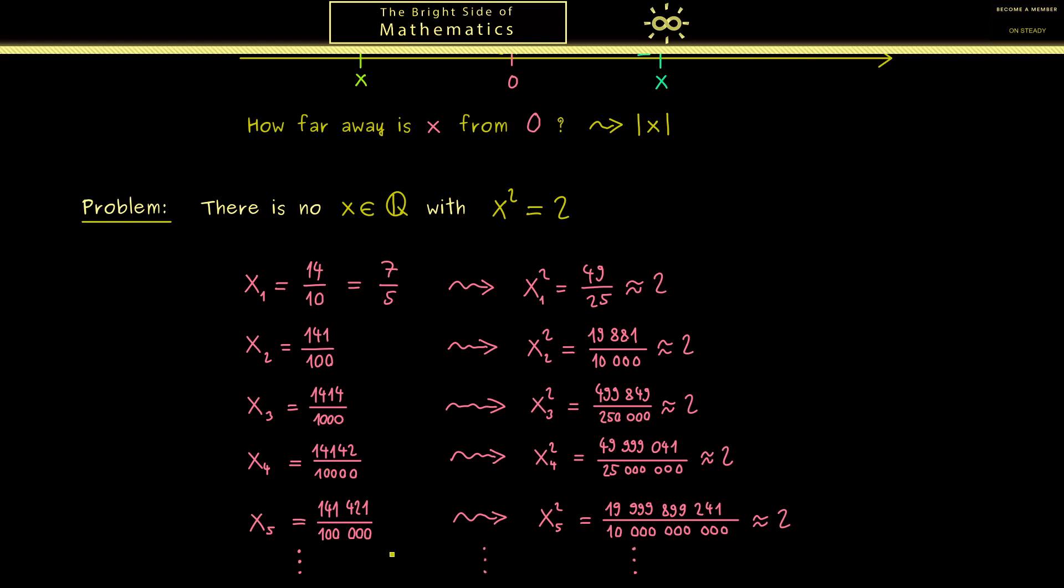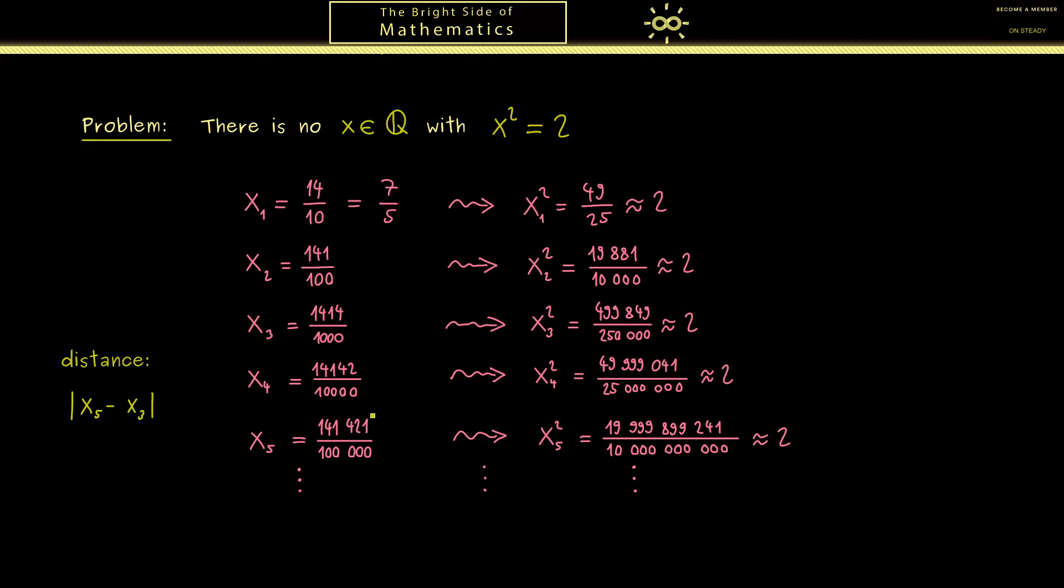Now at this point you should see that we could continue this whole procedure as long as we want. And the other important part you should see here is that the distance between two members gets smaller and smaller. Of course the distance we can measure with the absolute value of the difference. So having this nice approximation here, you could ask yourself why this whole procedure does not yield a solution in the end. The answer is that the rational numbers miss a property that has something to do with such limits here.